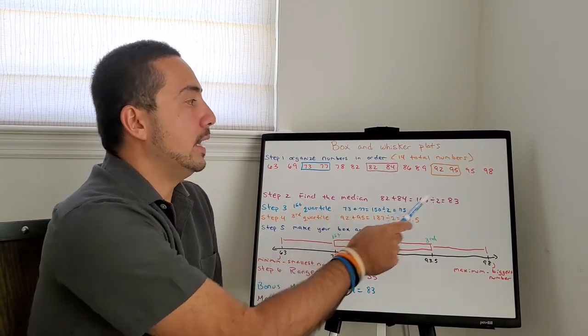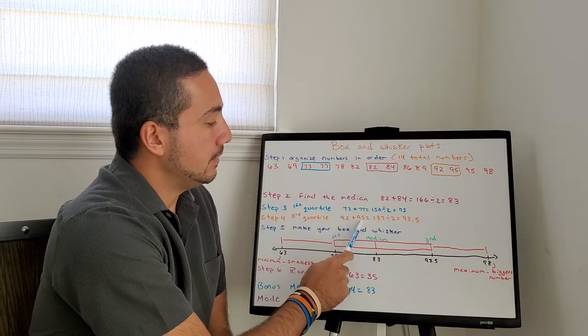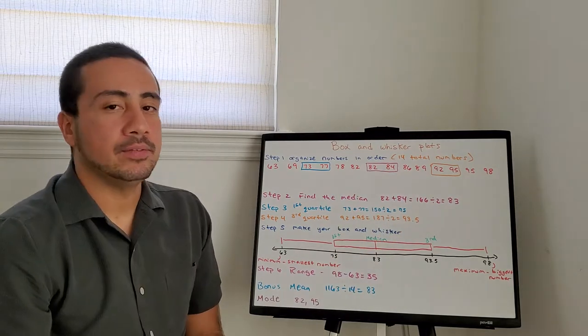Step 4, third quartile, middle of the upper half. 92 plus 95, 187. 187 divided by 2, 93.5.